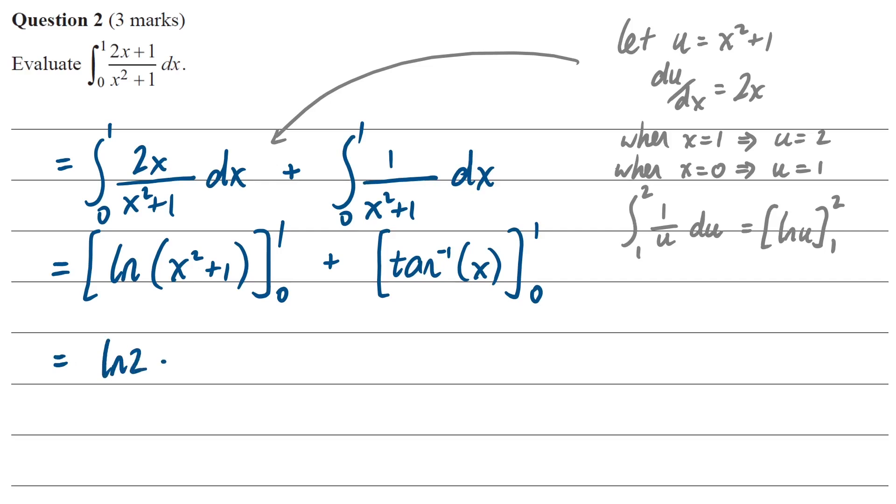So next step, we sub in our terminals, we'll get log of 2 minus log of 1 plus inverse tan of 1 minus inverse tan of 0. Log of 1 is 0, inverse tan of 1 is pi over 4, and that gives us our solution.